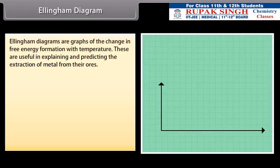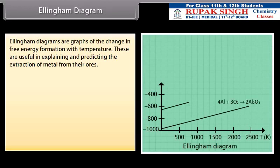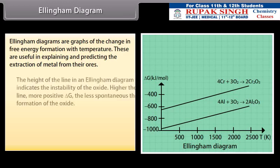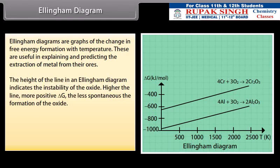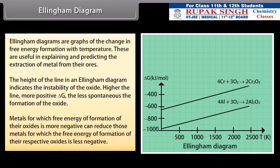Ellingham Diagram. Ellingham Diagrams are graphs of the change in free energy formation with temperature. These are useful in explaining and predicting the extraction of metal from their ores. The height of the line in an Ellingham Diagram indicates the instability of the oxide. Higher the line, more positive ΔG, the less spontaneous the formation of the oxide. Metals for which free energy of formation of their oxides is more negative can reduce those metals for which the free energy of formation of their respective oxides is less negative.